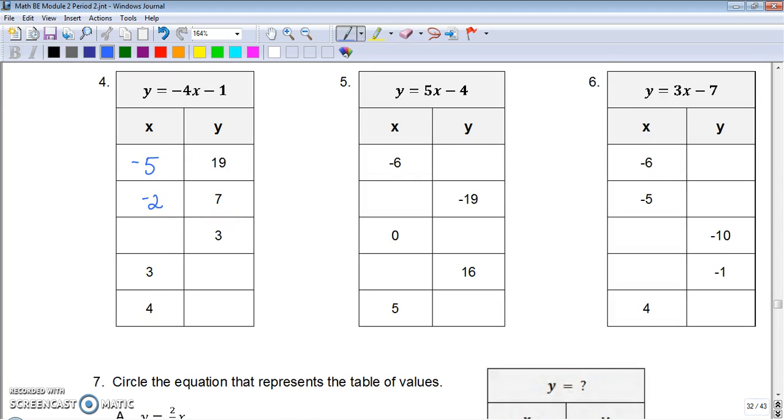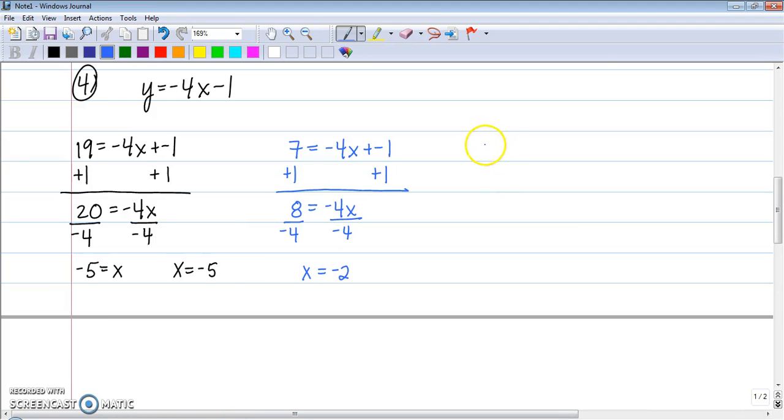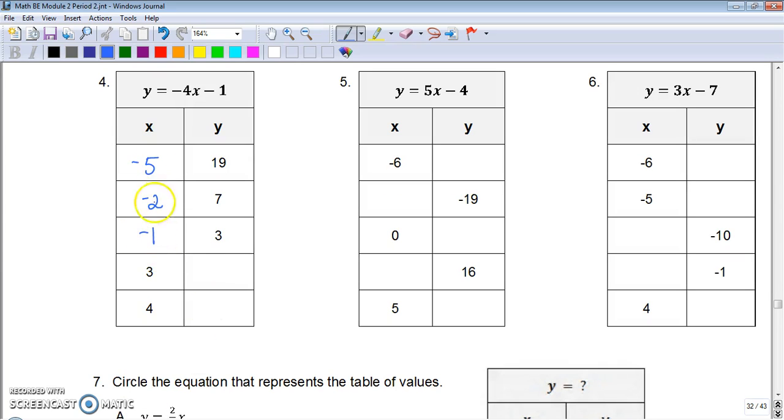Then it gives us 3. So we're going to set our equation equal to 3. Add 1 to both sides. Divide both sides by negative 4. And 4 divided by negative 4 is negative 1. When you notice, the table is going up. So this has a nice pattern.